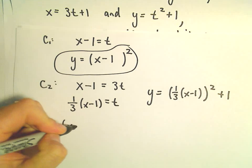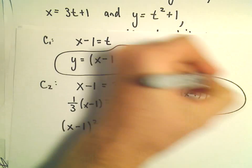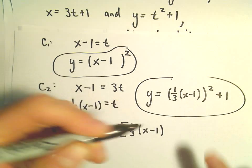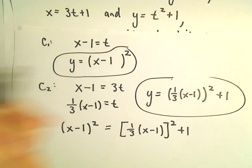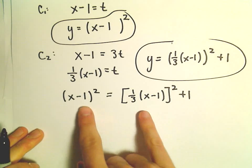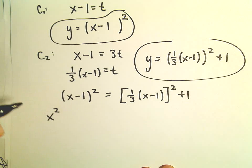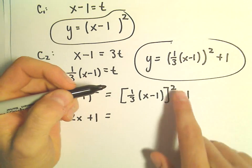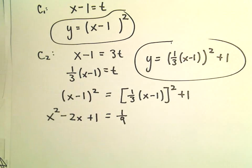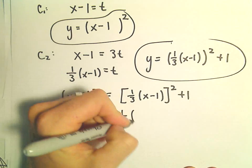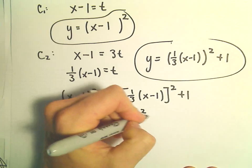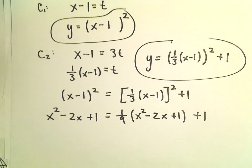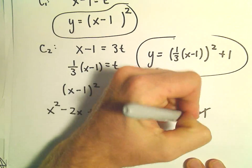So we'll set these equal. So X minus 1 squared, I'm going to set that equal to, well, 1 third times X minus 1 quantity squared plus 1. So I guess now we've just got a little quadratic equation. So I'm going to multiply out the left side. We would have X squared minus 2X plus 1. On the right side, we'll have 1 third squared, which will be 1 ninth. But then again, we've got X minus 1 quantity squared. So that'll give us X squared minus 2X plus 1. Then we have our other plus 1 still hanging out. We can subtract 1 from both sides. That'll cancel that out.